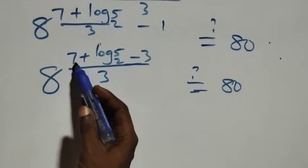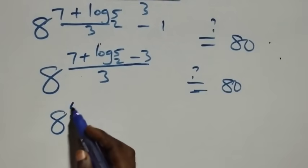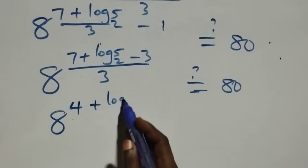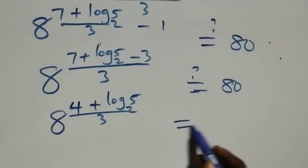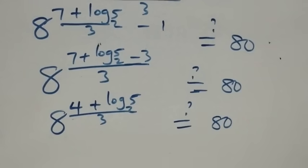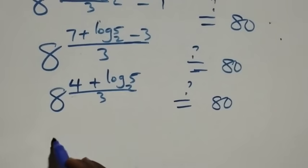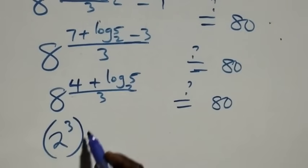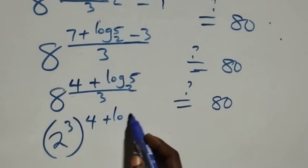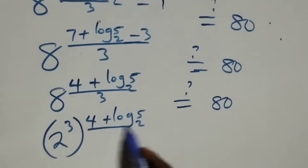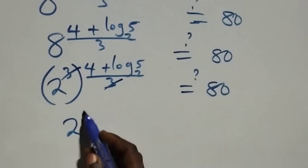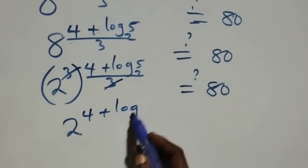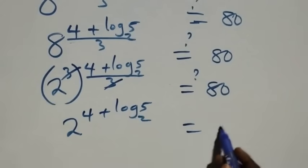Combining 7 minus 3 gives 4, so we have 8 raised to power 4 plus log base 2 of 5, all over 3, equals 80. We can write 8 as 2 raised to power 3, so 2 raised to power 3 times the quantity 4 plus log base 2 of 5 over 3. The 3 in the power and the denominator cancel, leaving 2 raised to power 4 plus log base 2 of 5, equals 80.